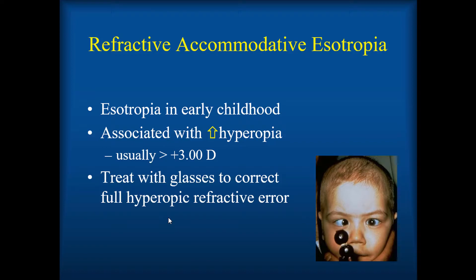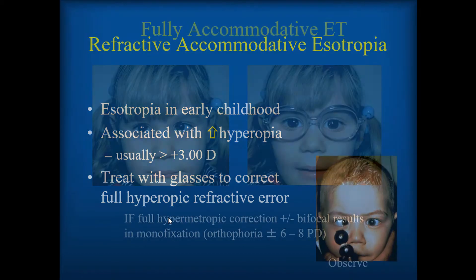I have no conflict of interest. Refractive accommodative esotropia is esotropia in early childhood, usually not in the first six months, although it can be. Typically between six months and three or four years of age is the onset. It's associated with high hyperopia, usually more than three diopters, although it can be less. We treat it with glasses to correct the full hyperopic refractive error. If the full hypermetropic correction, plus or minus bifocals if there's a high AC/A ratio, moves the patient into the monofixation range or orthophoria — plus or minus about six or eight prism diopters — then we just observe the patients and follow them for development of binocular vision and vision in each eye.